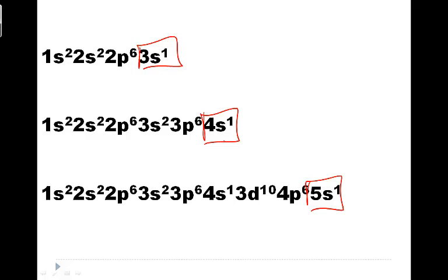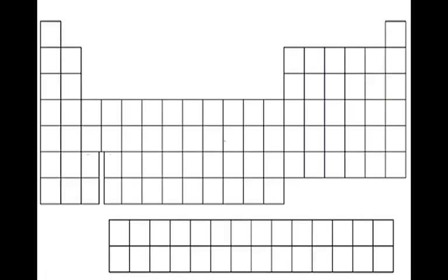So, when we take a look, we're not going to want to continue to have to do electron configurations to figure out the number of valence electrons. So, let's take a look at the periodic table. If you're an alkaline metal, we call this group 1A. All of these are going to have 1 valence electron. Group 2A is going to have 2 valence electrons.